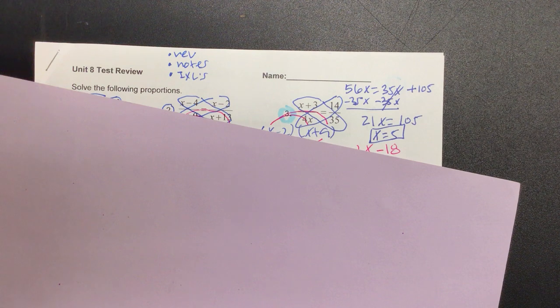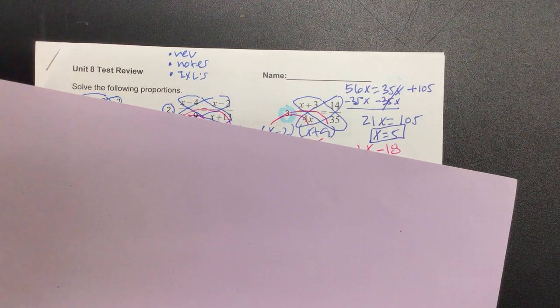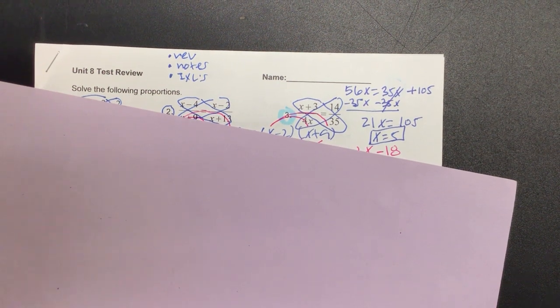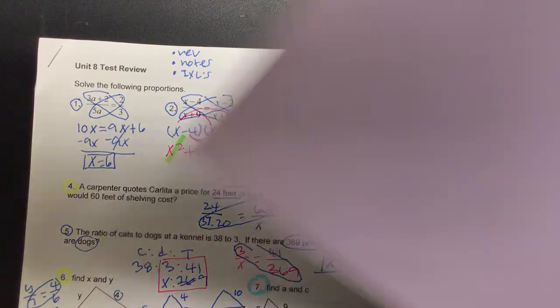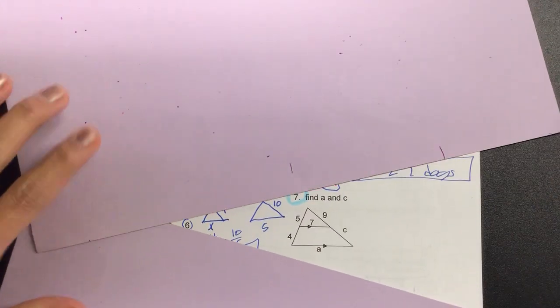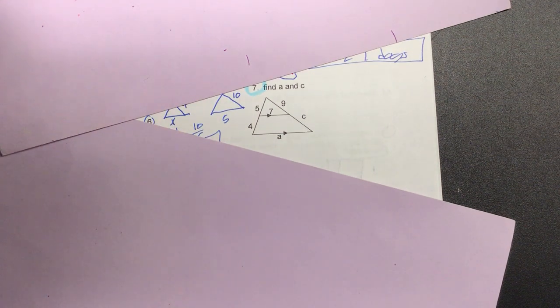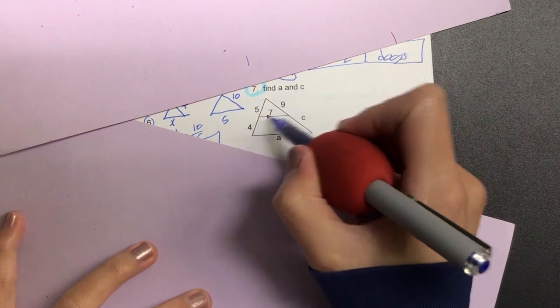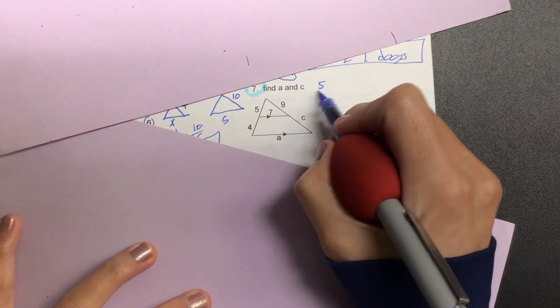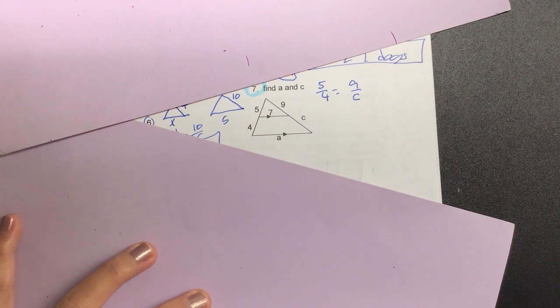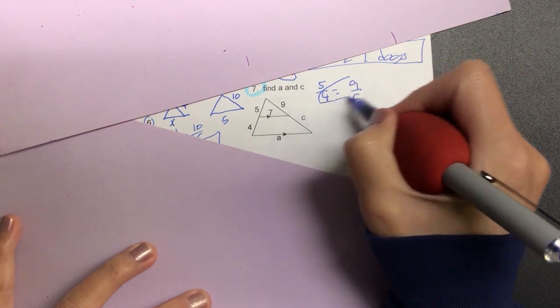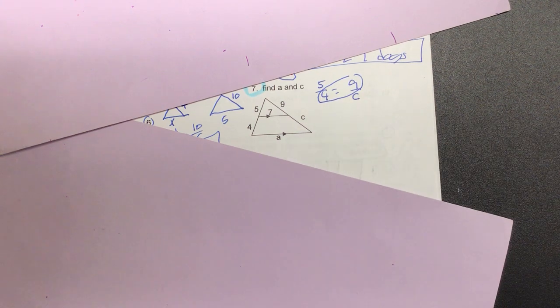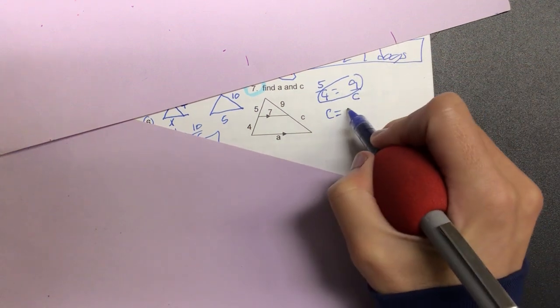So now let's go to number 7. On number 7, we're looking for A and C. So to find C, we know my sides are proportional, right? So we have 5 over 4 is equal to 9 over C. And I'm going to cross-multiply using the calculator. 4 times 9 divided by 5, 7.2. So C is equal to 7.2.